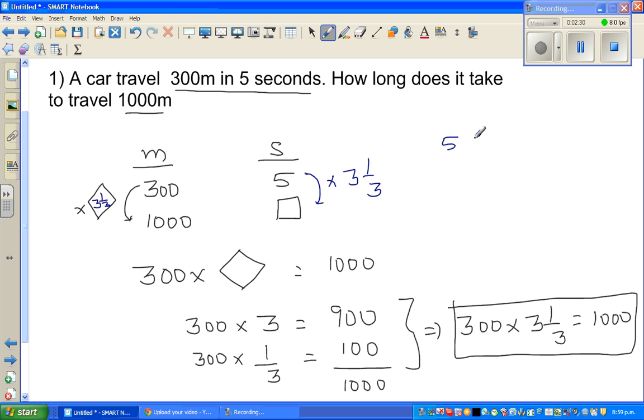So I'll go 5 times 3 and one third. Well, I'm going to split this. This means this is 5 times, this 3 and one third means it is 3 plus one third. Can you see 3 plus one third is 3 and one third. So using distributive properties, this is 5 times 3, which is 15, and 5 times one third is 5 thirds.